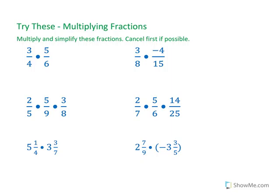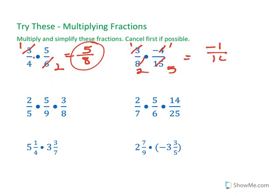I'm going to complete them now. So, we have 3, 2, and can't do anything with the 4 and the 5, or the 4 and the 2, so my answer is going to be 5 over 8. And 3 goes into both of these, and 4 goes into both of these, and I end up with negative 1 over 10.